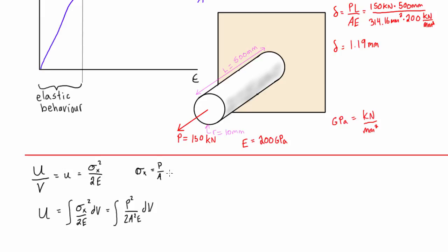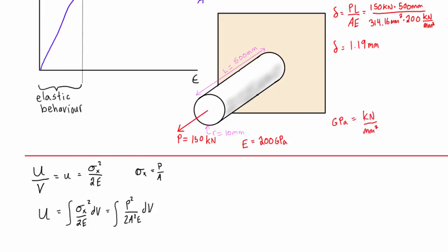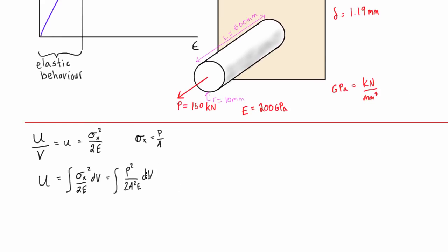Now this expression is useful to us if we are dealing with members with non-uniform cross sections, but if we have something like this with a uniform cross section, then what we can do is we can rewrite dV, let me just write that a little nicer, dV is just the cross sectional area times dx. So we can write this, let's write it over here.